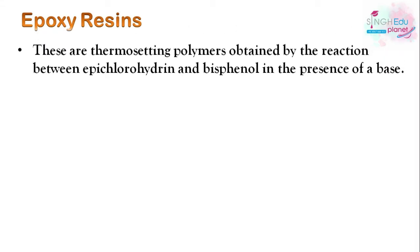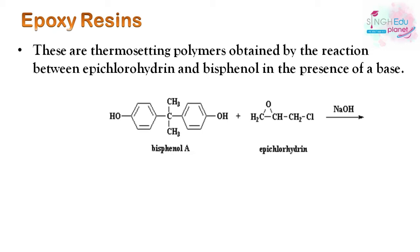The second epoxy resin polymer is important. These thermosetting polymers are obtained by reaction between epichlorohydrin and bisphenol in the presence of a base. Epichlorohydrin is similar to ethylene oxide but has a CH2Cl group.